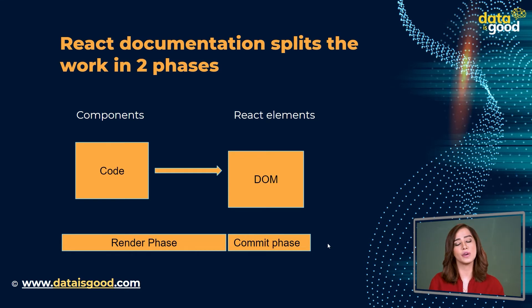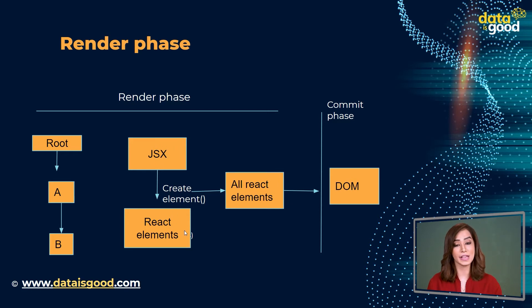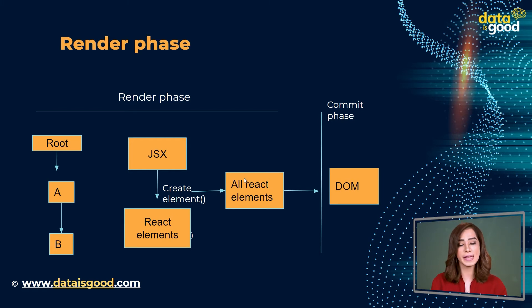Let's first understand the render phase. During this phase, React starts at the root of the component tree and goes downwards to the leaf components. For each component, React converts the JSX into React elements through the createElement method and stores that rendered output. React elements are basically JavaScript objects that describe the structure of the UI. Once the JSX-to-React-element conversion is done, the entire component tree — all the React elements — is handed over to the commit phase.